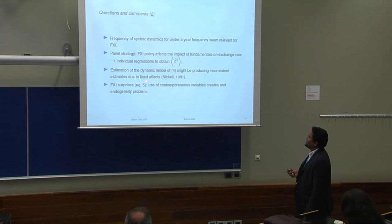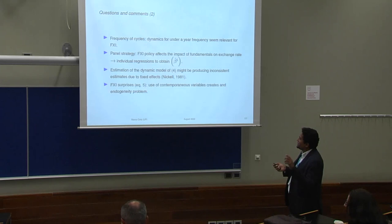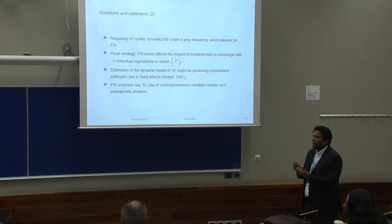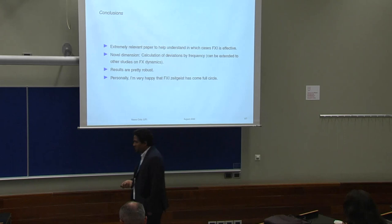There may also be some issues with fixed effects in the estimation of the dynamic model — this relates to the well-known Nickell bias paper from 1981. In the calculation of FXI surprises, volatility is endogenous to intervention rules, so using contemporaneous exchange rate volatility might create endogeneity problems. Maybe using a lagged or longer measure would help.